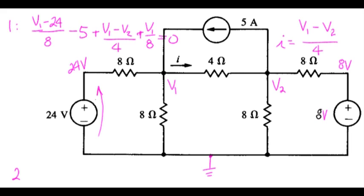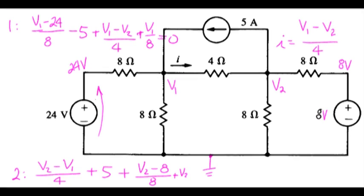The second equation: I'll start with the westbound current, V2 minus V1 over 4. The northbound current is 5 amps. The eastbound is V2 minus 8 divided by the 8 ohm resistor, and the southbound current is V2 minus 0 over 8. That result is 0.